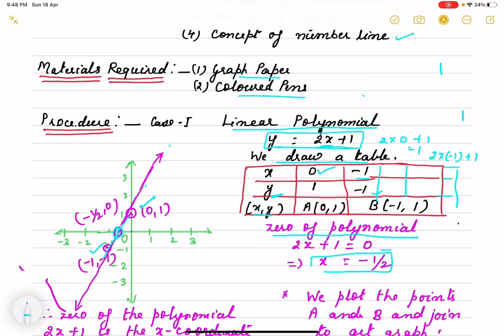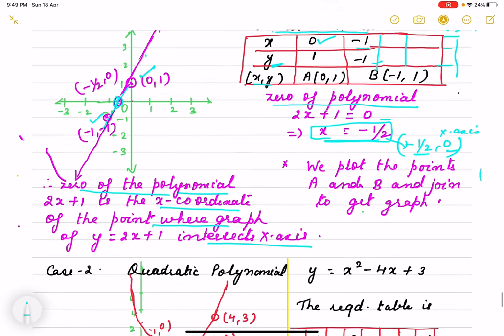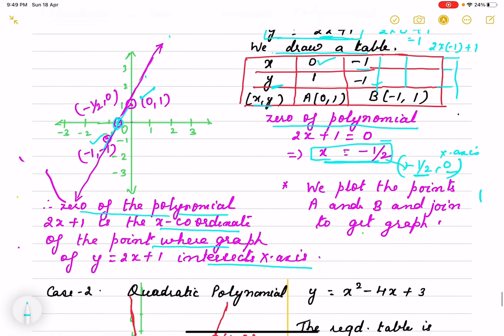So the graph intersects at minus half, 0 means abscissa is the same and as it intersects x-axis, ordinate is 0. We find that zero of the polynomial is the x-coordinate of the point where it intersects x-axis. As linear polynomial has degree 1, it intersects at one point.